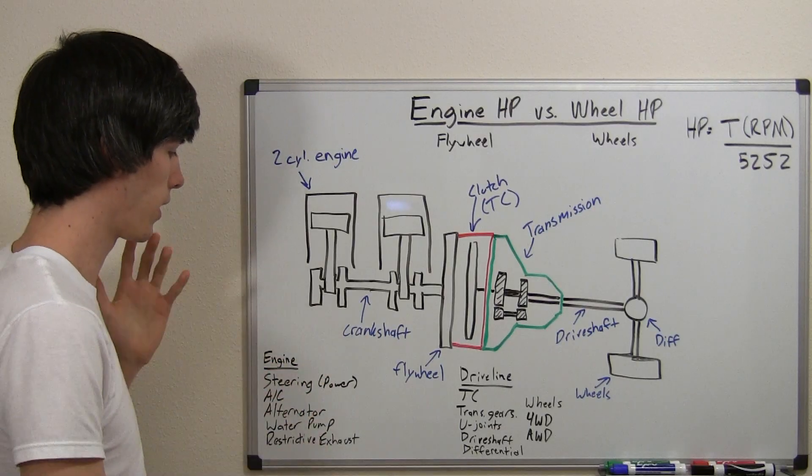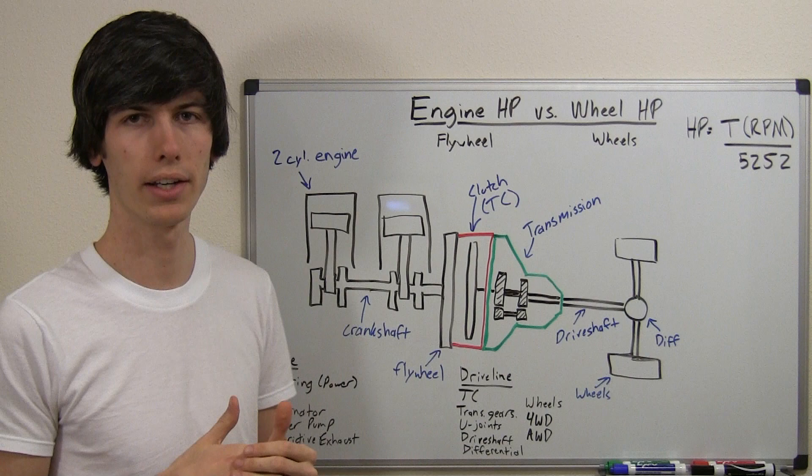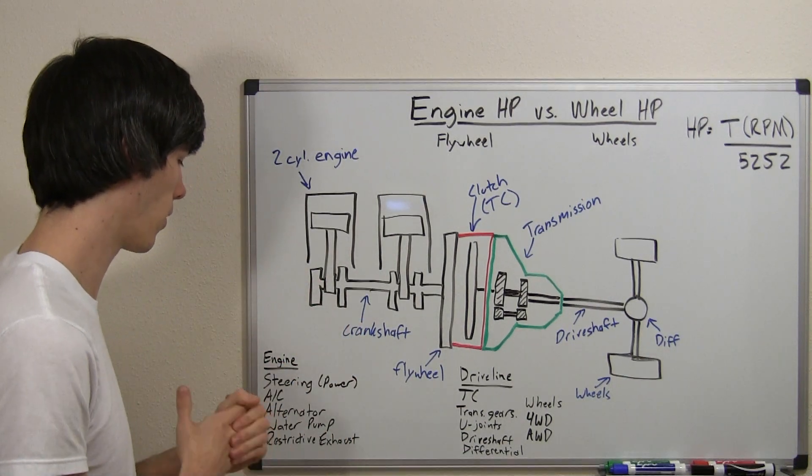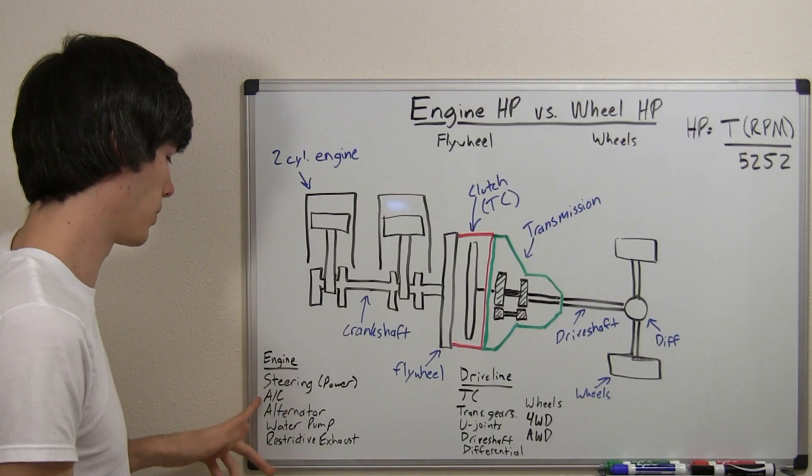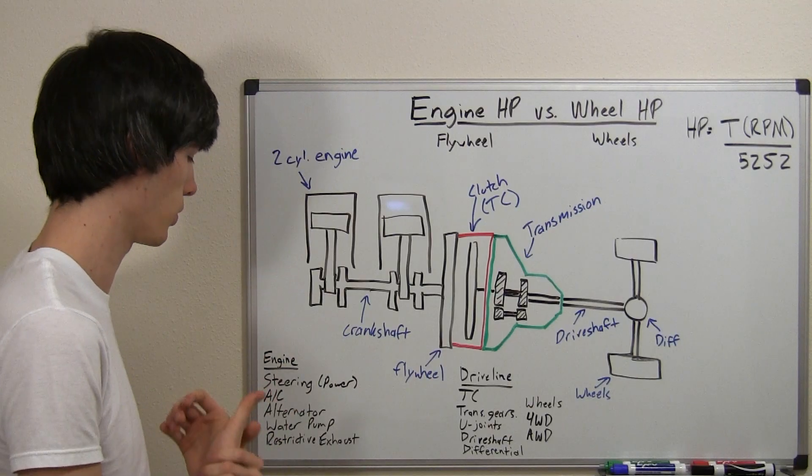So what are some of the things that they might exclude from the engine horsepower? Well, if it has power steering, they're not going to account for the power required in order to steer the car. They also may not include the power if you have your air conditioner on. You have to run a compressor, and that drains power from your engine.